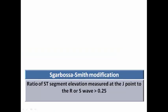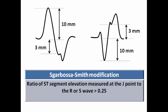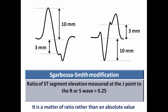There is a modification to the Sgarbossa criteria called the Smith modification. The third criterion, which used an absolute value of five millimeters of discordant ST-elevation, was modified to use a ratio instead. In the Smith modification, it is the ratio of the ST-elevation measured at the J point to the amplitude of the preceding S wave or R wave. If the discordant ST-elevation exceeds 25% of the amplitude of the S wave or R wave, it scores two points. So it is a ratio rather than an absolute value.